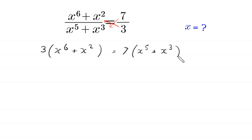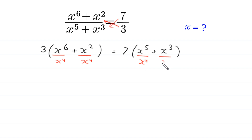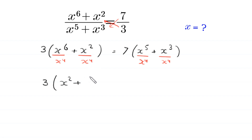Now, from here we divide both sides of this equation by x to the power 4. We divide each term by x to the power 4. We divide this x cubed by x to the power 4. So, this left hand side will become 3 times x to the power 6 over x to the power 4, which is x squared, plus x squared over x to the power 4, which will become 1 over x squared.